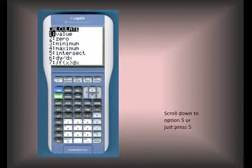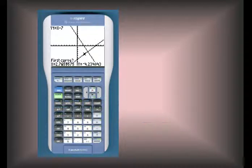We can either scroll down using the down arrow until we get to 5 and then press enter, or we could just press 5. When we do that, we would get a screen that looks like this.